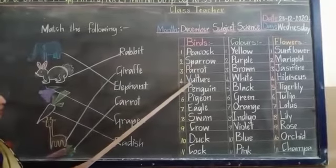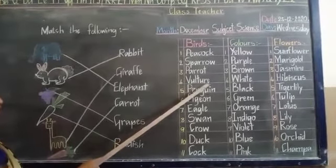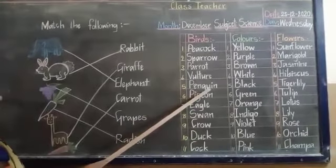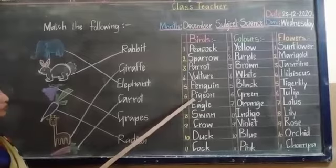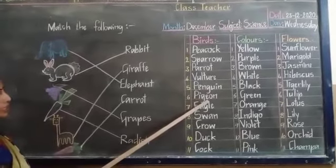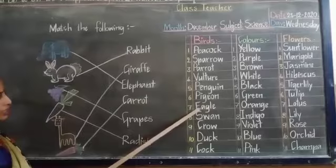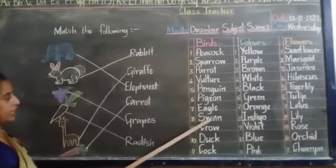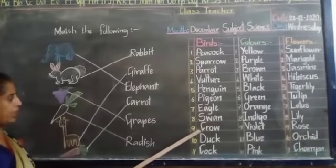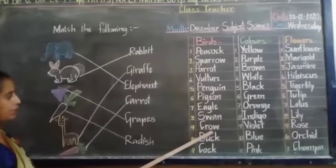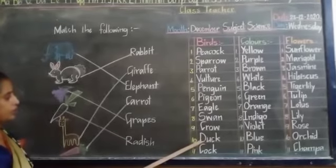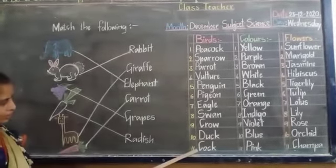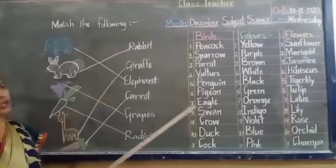Parrot. P-A-R-R-O-T. Vulture. V-U-L-T-U-R-E. Pigeon. P-I-G-E-O-N. Eagle. E-A-G-L-E. Swan. Crow. C-R-O-W. Crow. Duck. D-U-C-K. Duck. Cock. C-O-C-K. Cock.